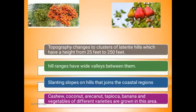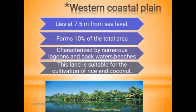Cashew is a major crop of this region. This area is green in the midland. The elevation is 7.5 meters to 75 meters. The third region is the Western Coastal Plain, which is at sea level.